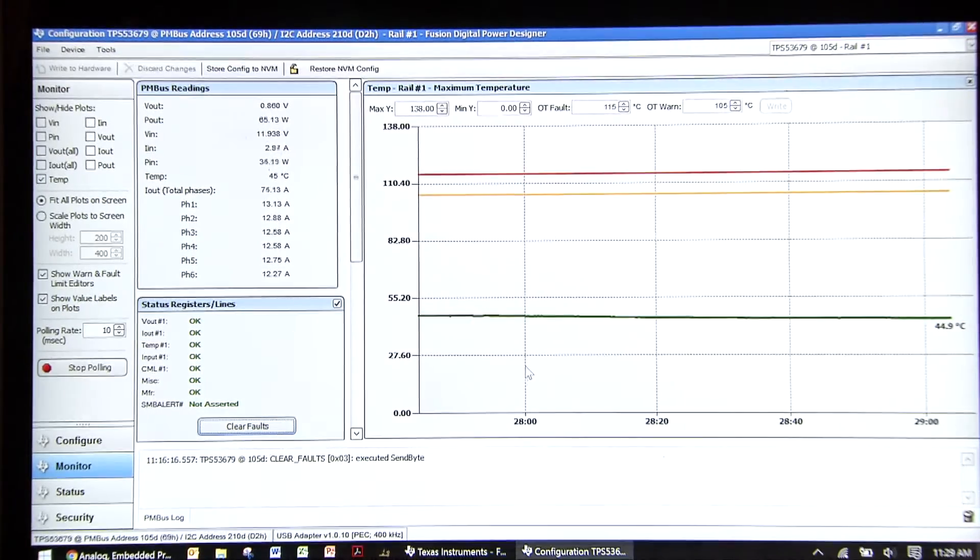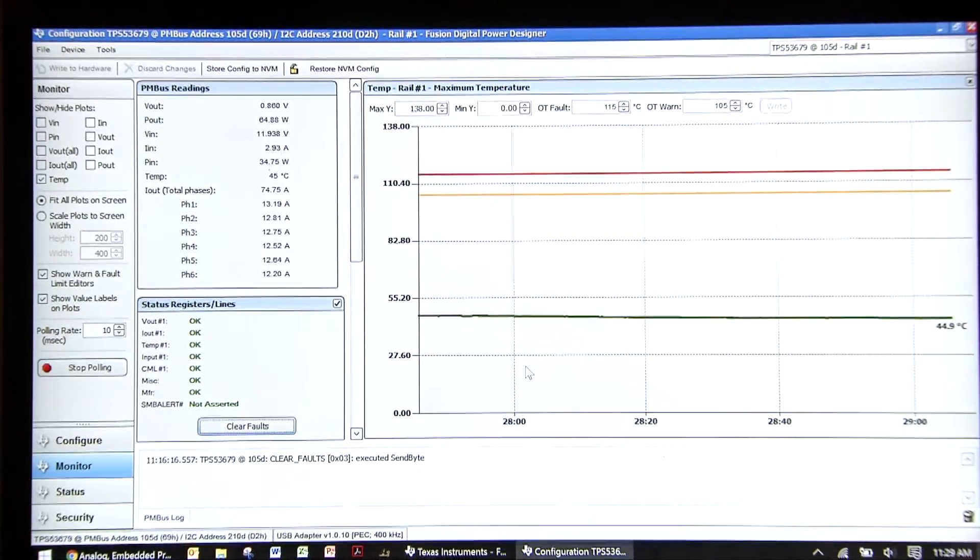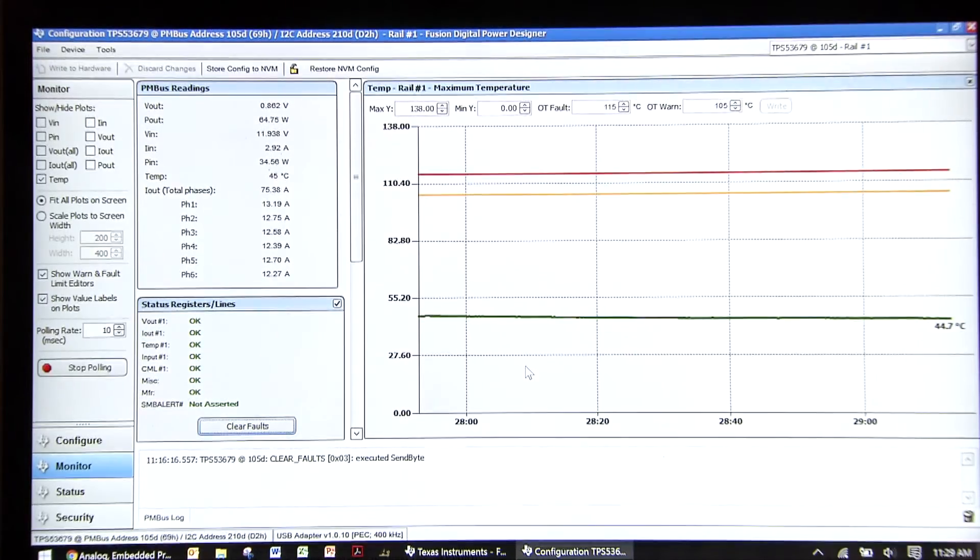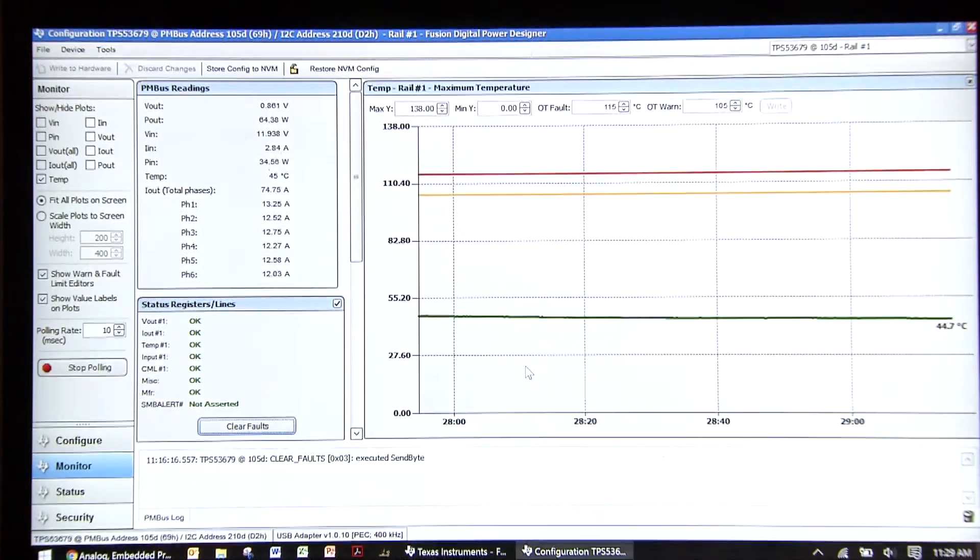After five minutes at 80 amps with the airflow, we now read 44 to 45 degrees Celsius, about eight degrees lower than before. In a real system with heat sinks also in place, it's possible to do even better.